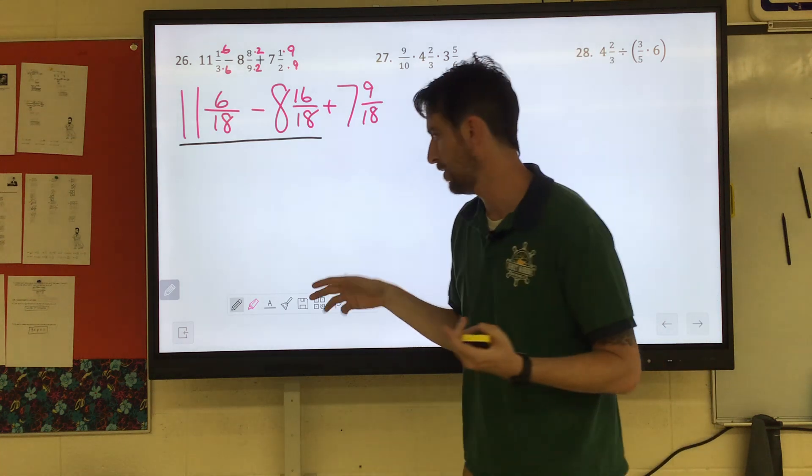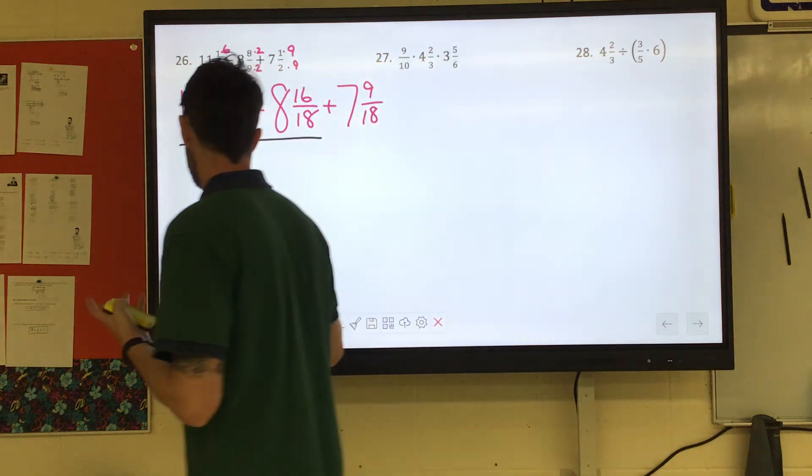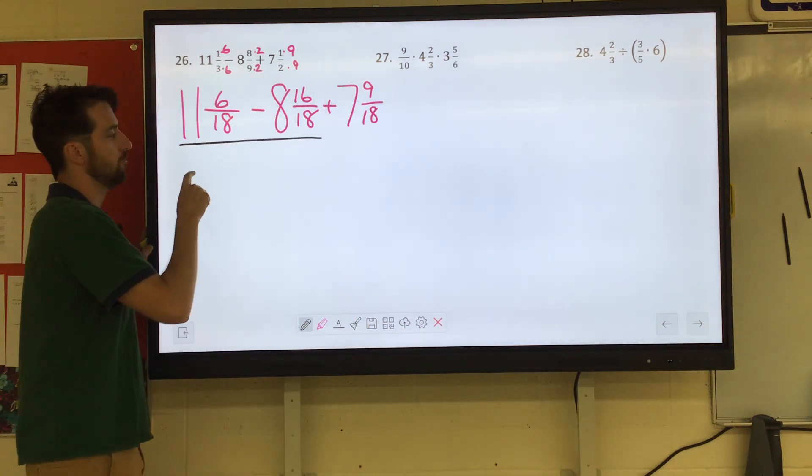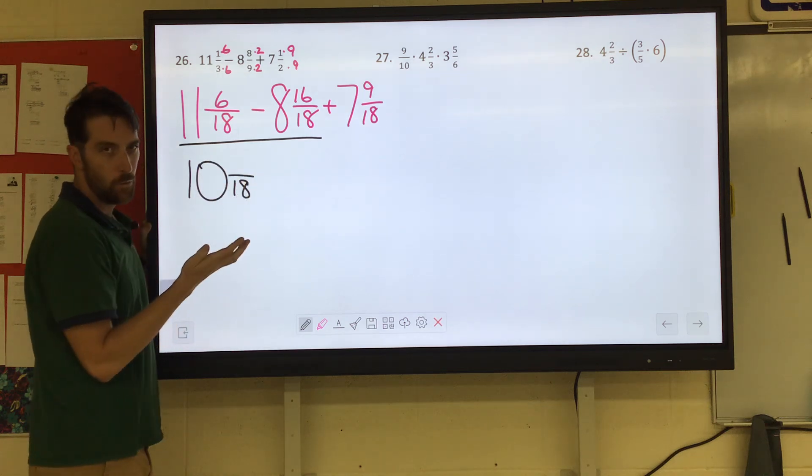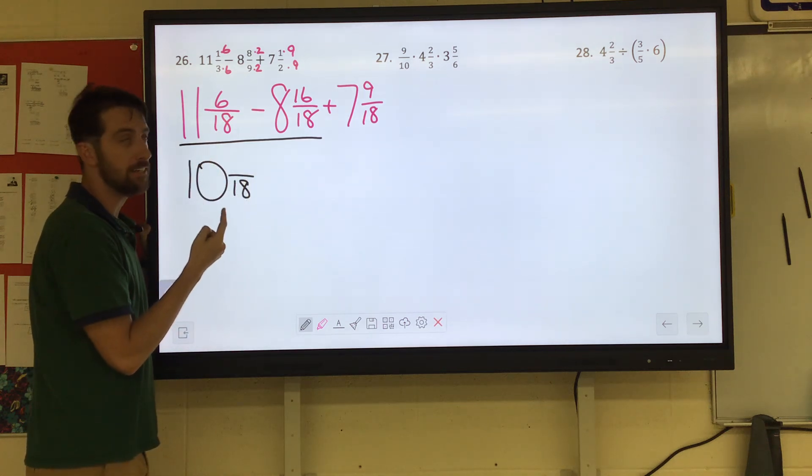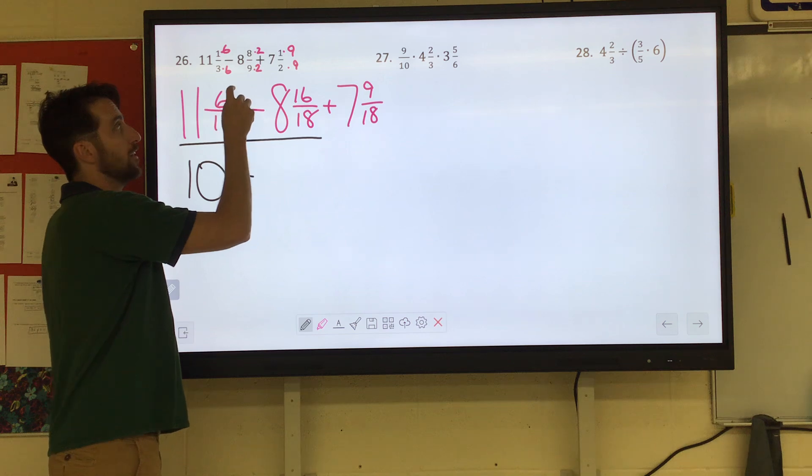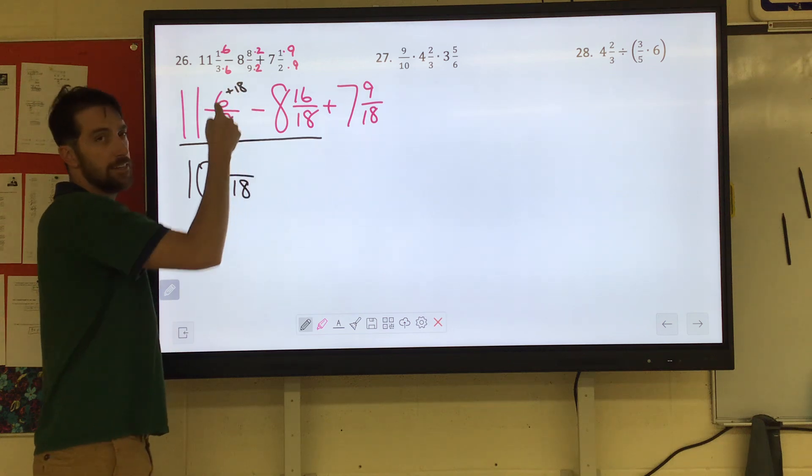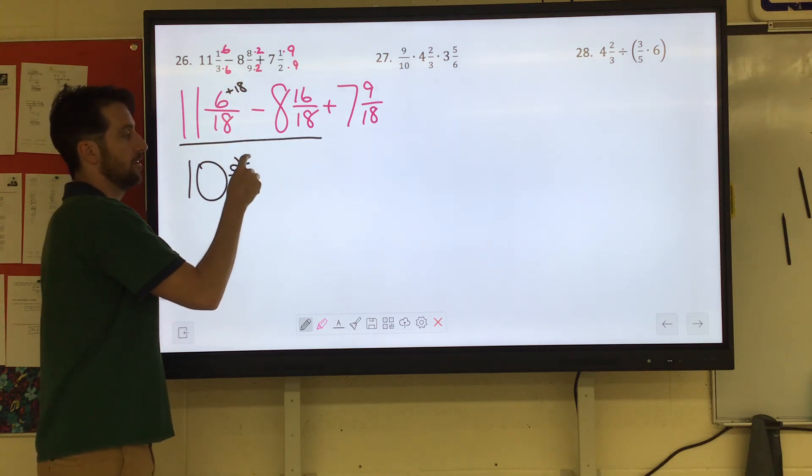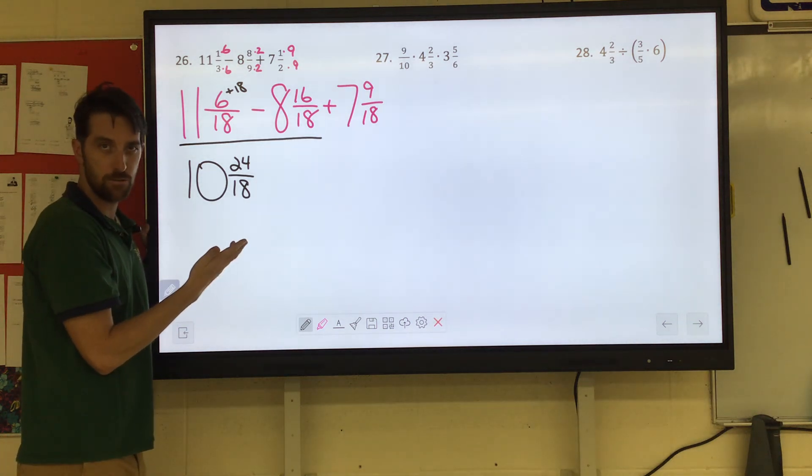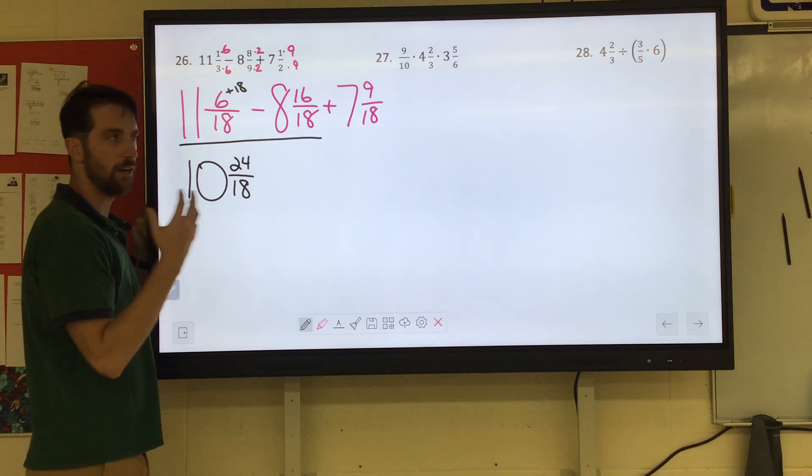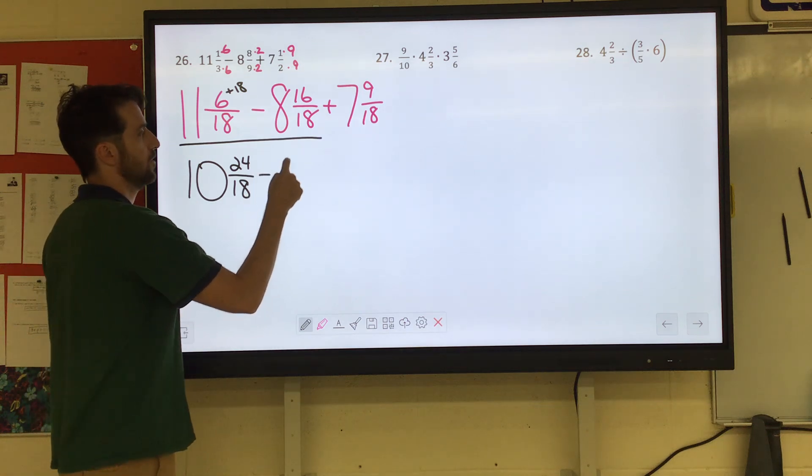Now, you'll notice we don't have enough eighteenths to make that happen. So what we've done in the past is we borrowed a whole from this 11. We bumped it down to 10. And that whole, that 18 out of 18, goes in the numerator. So it's kind of like we're adding 18 to that six. So you have 10 and 24 eighteenths. You would never leave that as your final answer. That's goofy. But that'll allow us with that regrouping to do this subtraction now.